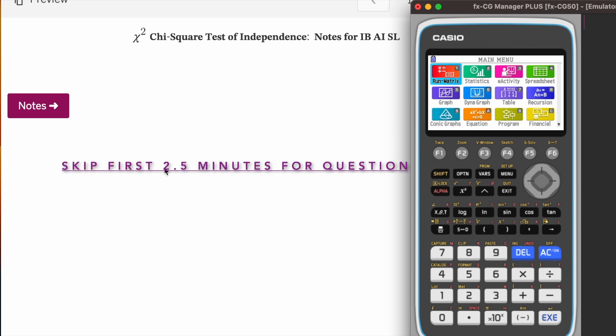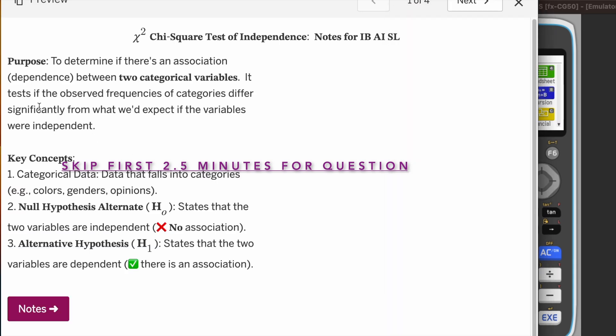If you want to skip the notes, you can skip and go to the question directly. The first thing you need to know is that chi-square test is performed when you have two categories and you want to compare whether one variable or category is dependent on the other or not.